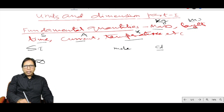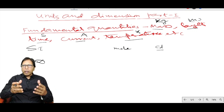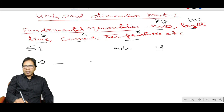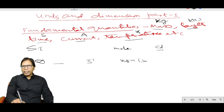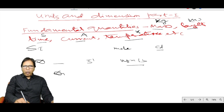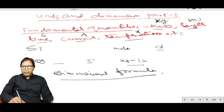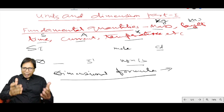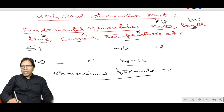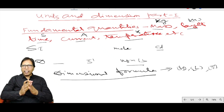Derived units are formed by combining one or more fundamental units. For example, the unit of frequency is second inverse (s⁻¹), and the unit of momentum is kg·m/s. Now, dimensional formula is the relation of a physical quantity with fundamental quantities like mass, length, time, etc.